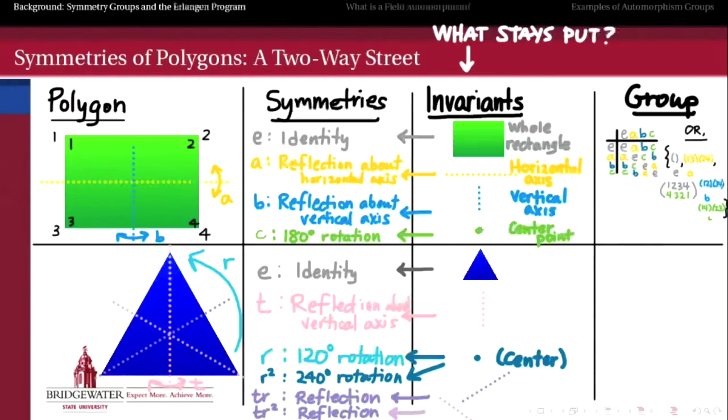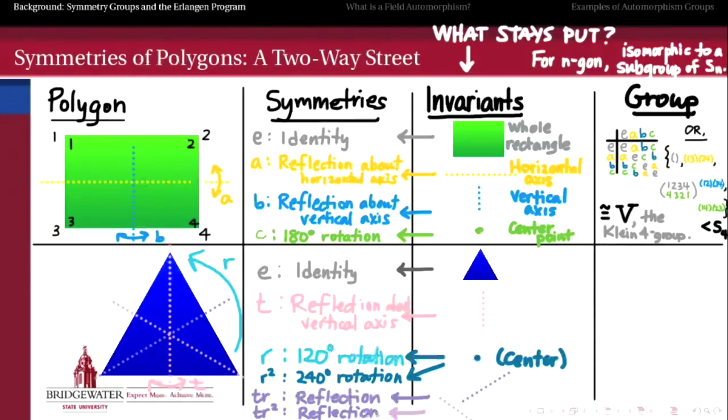And so what we've done here is we've realized this group of symmetries actually as a subgroup of the symmetric group on four symbols. And there's a key observation is that if I'm looking at the symmetries of an n-gon, so a polygon with n vertices, then that group is going to be isomorphic to a subgroup of Sn, the symmetric group on n symbols, where the symbols here correspond to the vertices of that polygon. And for this particular example, we find out either by the Cayley table or by looking at the two plus two cycles that make up the subgroup of S4, that this symmetry group is really isomorphic to V, the Klein IV group.